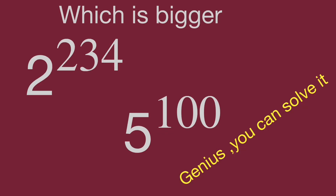Hello, you are watching Bala Hippo math genius videos. We have two values: 2 power of 234 and 5 power of 100. Judge which one is bigger. Would you please try to find it? Pause the video and compare these two values.